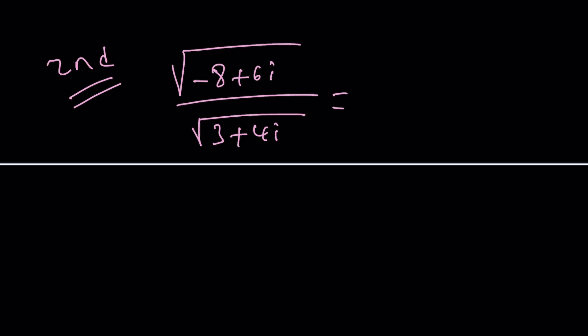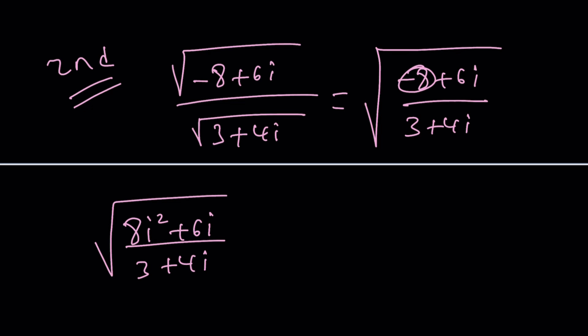So here's what we're going to do instead. I'm going to put those under the same radical because I can. Right? That's the cool thing about the method. And then I'm going to go ahead and write the negative eight as negative one as i squared. So I'm going to write this as eight i squared plus six i and this one as three plus four i.